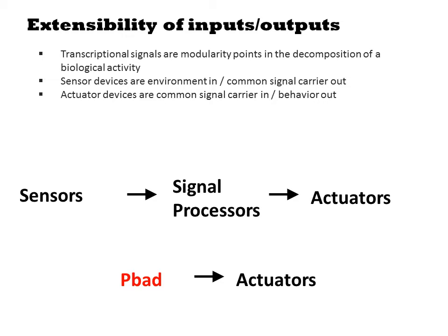Actuators are devices that input a transcriptional signal and output some non-transcriptional behavior. That would include an operon encoding a biosynthetic pathway, or perhaps proteinaceous appendages to the cell surface. You typically characterize an actuator by placing it under the control of a simple inducible promoter such as PBAD and monitoring some measure of the output behavior as a function of inducer concentration. For example, if your sensor was a PBAD promoter and you have it driving an actuator that is a biosynthetic pathway for violacein.